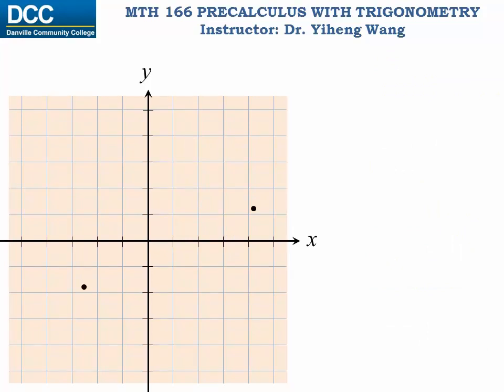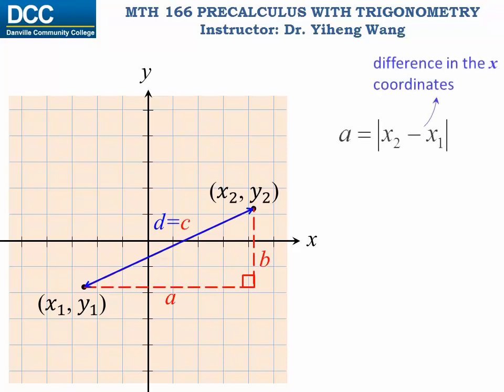So in general, if there are two arbitrary points on the Cartesian plane with coordinates x1, y1 and x2, y2 respectively, we can draw the right triangle in a similar way. The distance between the two points is the length of the hypotenuse side of this right triangle. A equals the difference in the two x coordinates, and b equals the difference between the two y coordinates.